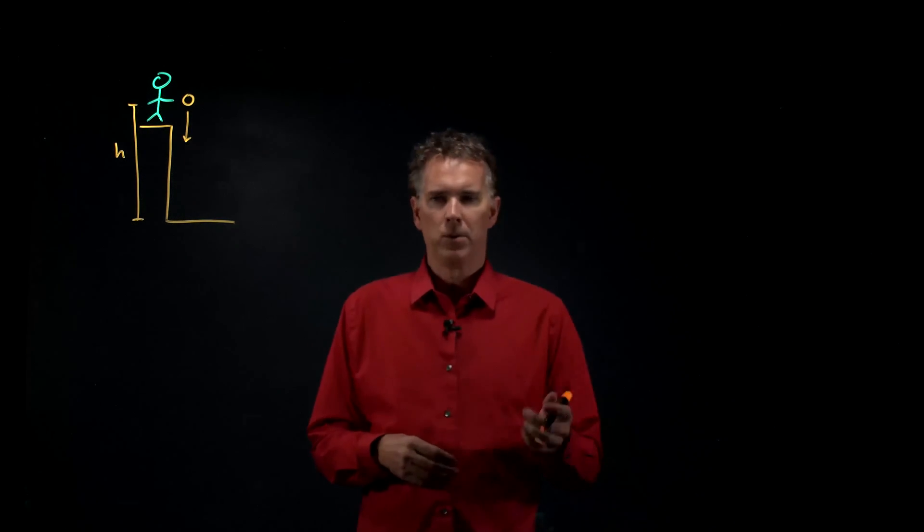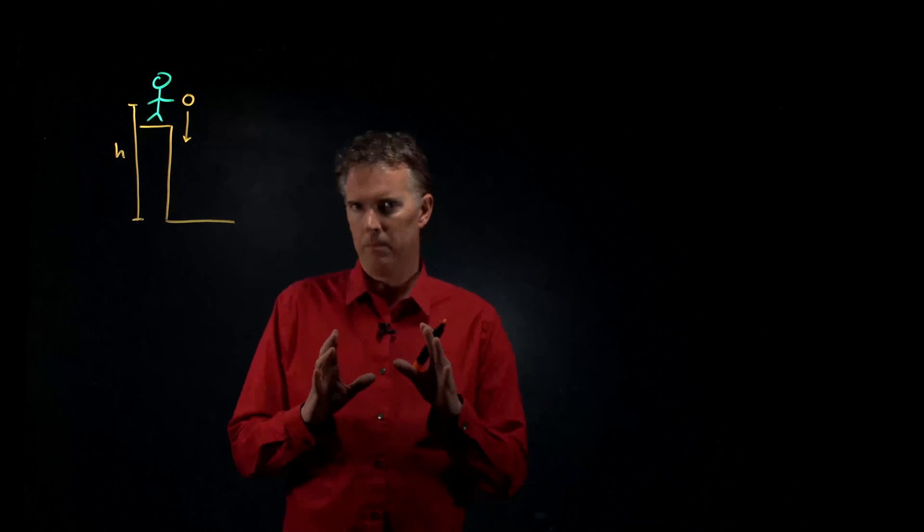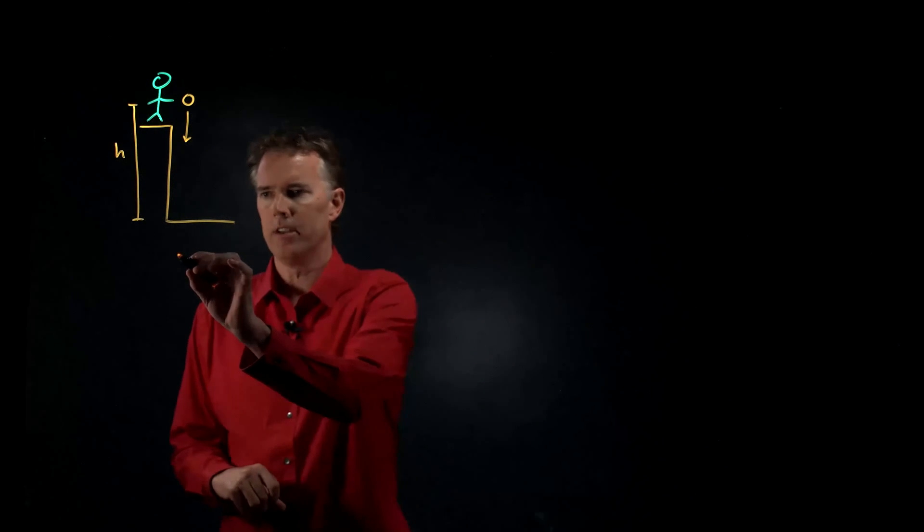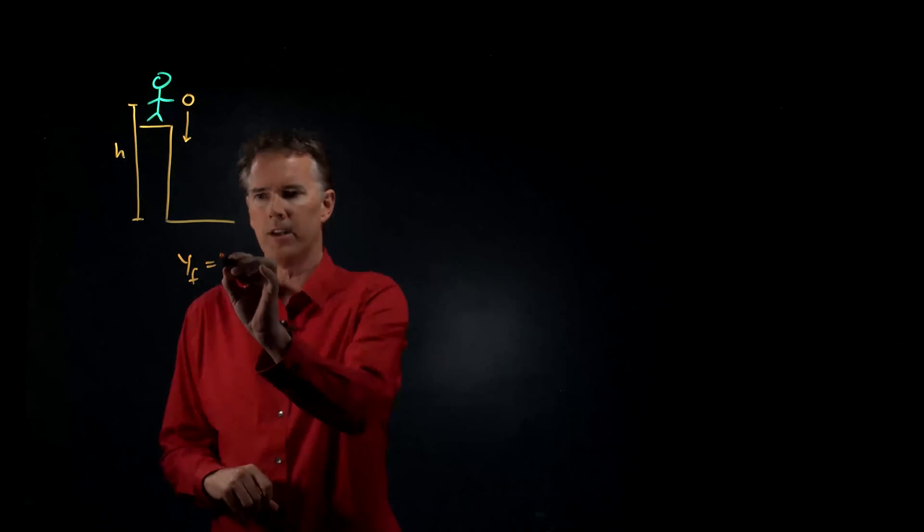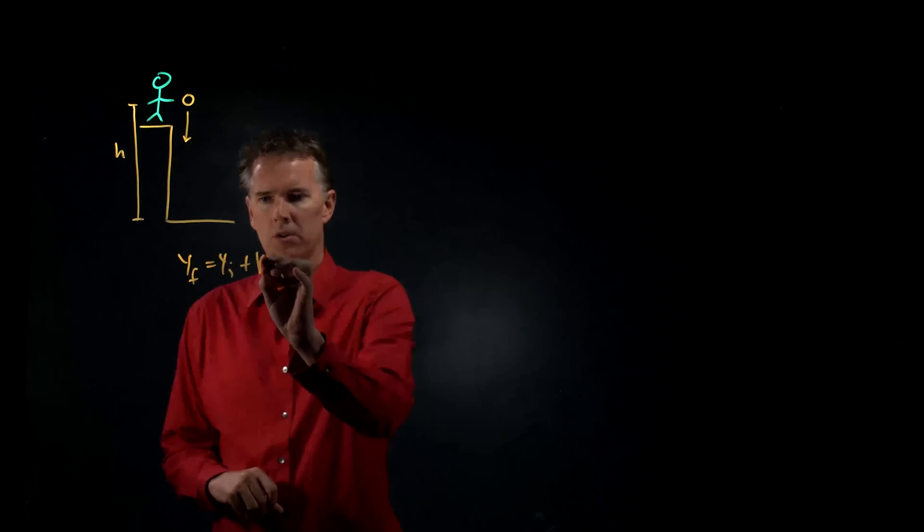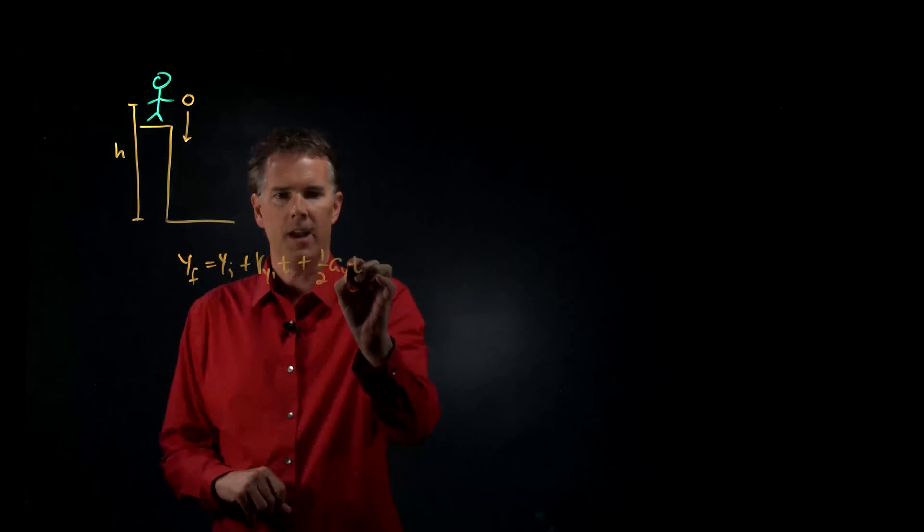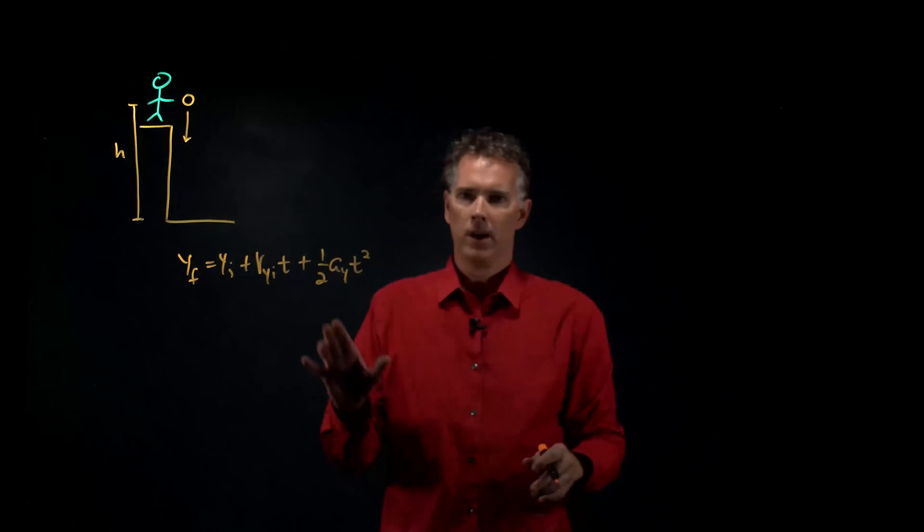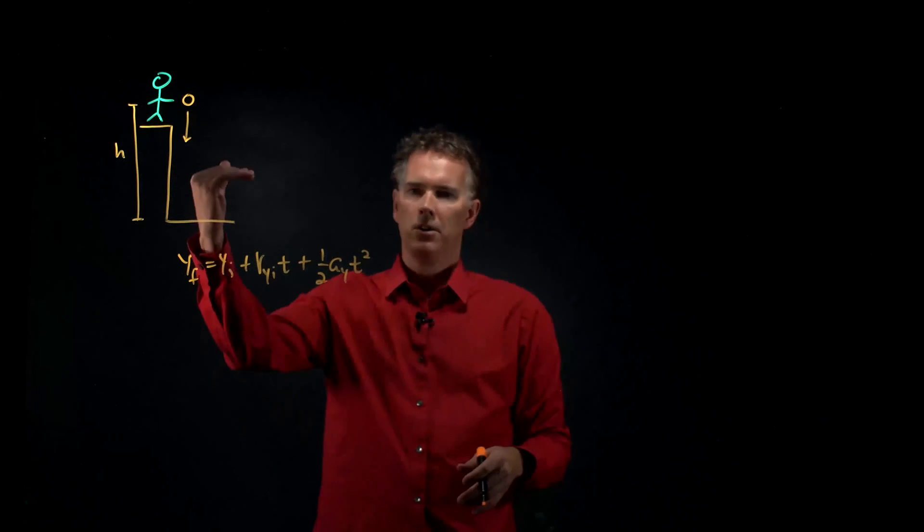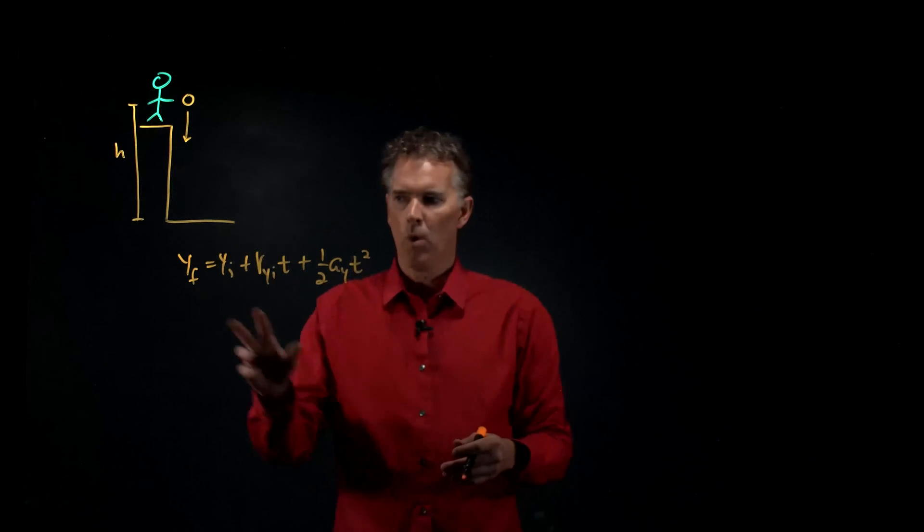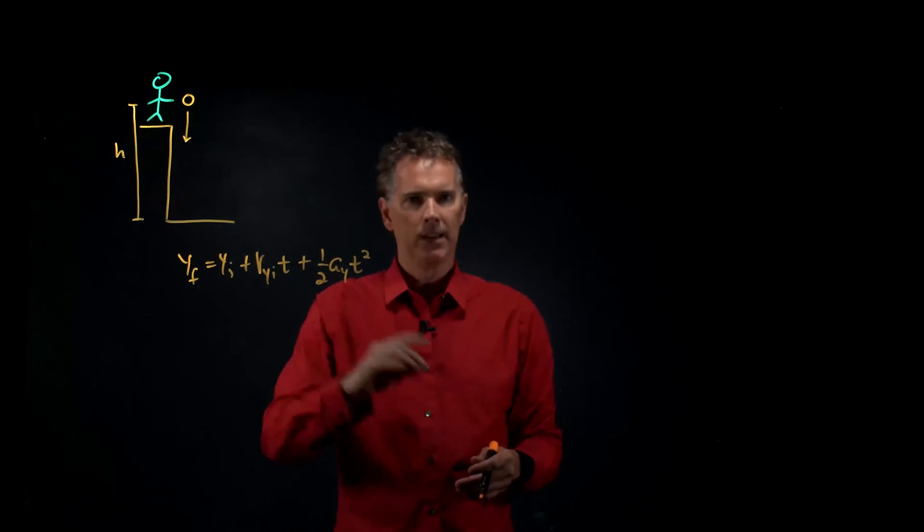So to do this we need to go back to our kinematic equations and one of the kinematic equations that we have is the following. Y final equals y initial plus vy initial times t plus one half ay t squared. Right? This is a great equation to understand the position y as a function of time given these other variables.